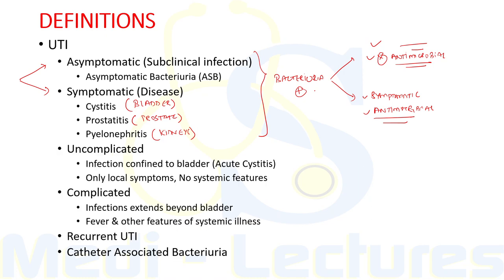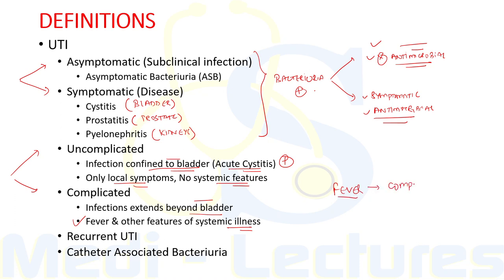There is also classification into uncomplicated and complicated UTI. Uncomplicated refers to an infection confined only to the bladder — acute cystitis — with only local symptoms such as dysuria, frequency, and urgency, and no systemic features like fever. Complicated UTI is accompanied by symptoms suggesting infection has extended beyond the bladder — to the prostate, kidneys, or systemic circulation — with fever and other features of systemic illness. If a patient with acute cystitis complains of fever, it is always considered complicated UTI.